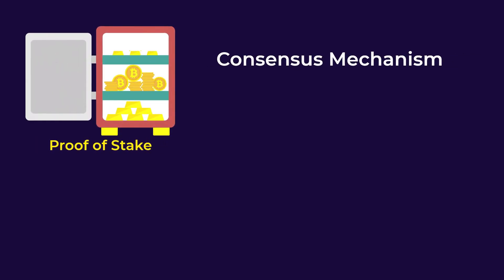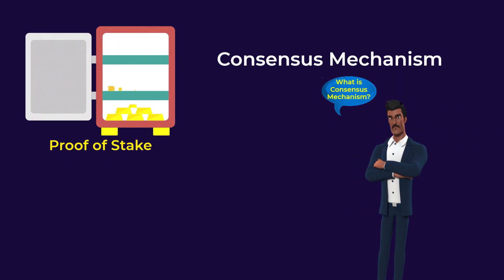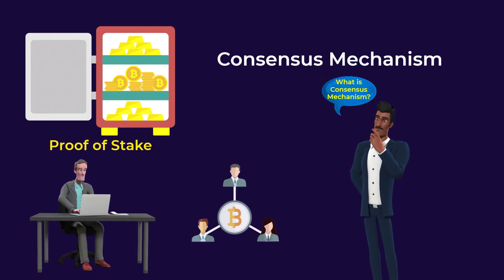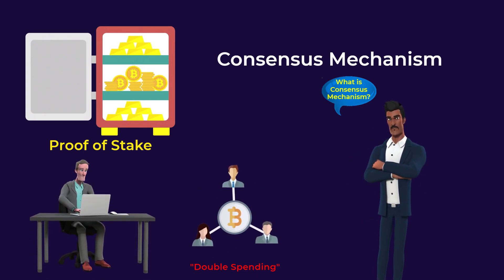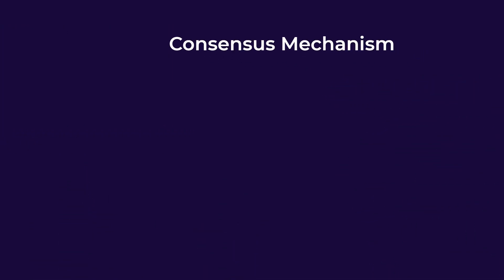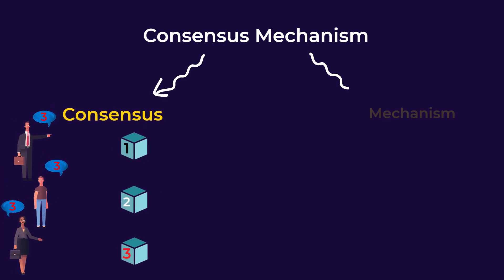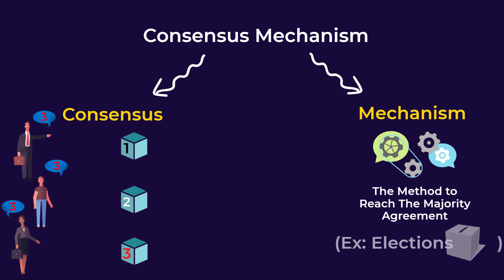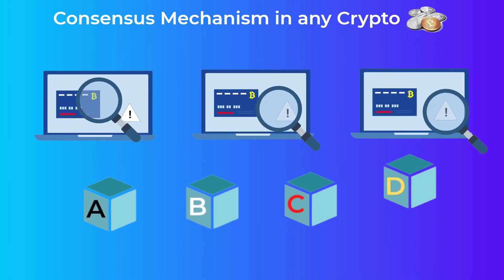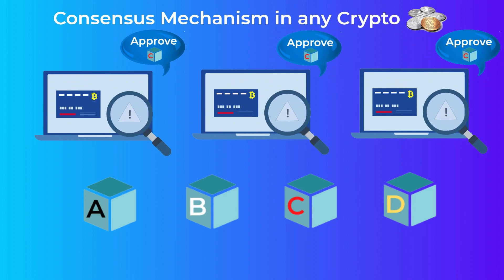Proof of stake is a consensus mechanism used by a lot of cryptocurrencies today. You may be wondering what a consensus mechanism is. Any cryptocurrency in the world needs to make sure that no one can spend the same coins twice. To do this, we use something called a consensus mechanism. Simply, the word consensus means the majority agreeing on something, and a mechanism is the way or method we use to reach this majority agreement. A consensus mechanism in any crypto is the way computers on the network decide which transactions to approve and which transactions to deny.